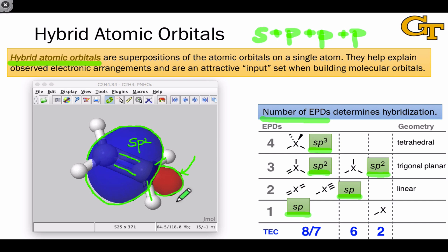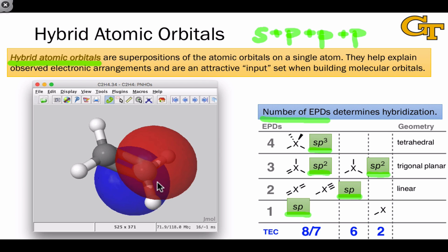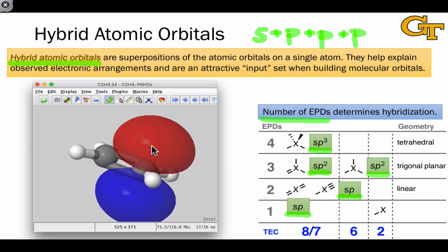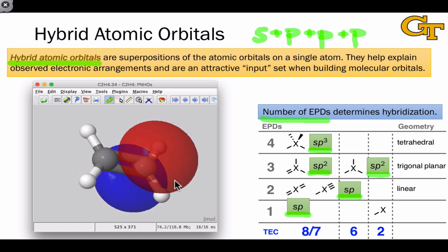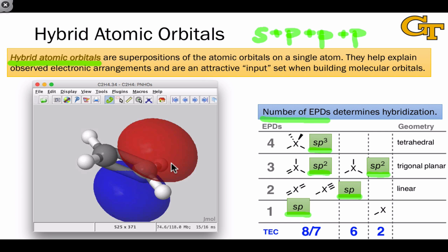We find two more sp2 hybrids pointing to each of the hydrogen atoms on each carbon atom. And because we only use two of the p orbitals, an unhybridized p orbital perpendicular to the plane of the molecule remains on each carbon atom. These are the inputs to the pi bonding and anti-bonding molecular orbitals of the molecule.